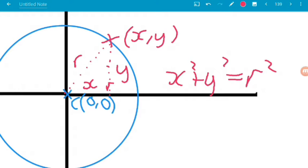Now that is your general equation for a circle centered at the origin, the point zero zero.